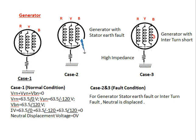In Case 2, a stator winding earth fault occurs, causing the terminal voltage to be reduced. In Case 3, a generator inter-turn fault occurs, and again the terminal voltage is reduced. Cases 2 and 3 are fault conditions — for a generator stator earth fault or inter-turn fault, the neutral is displaced.